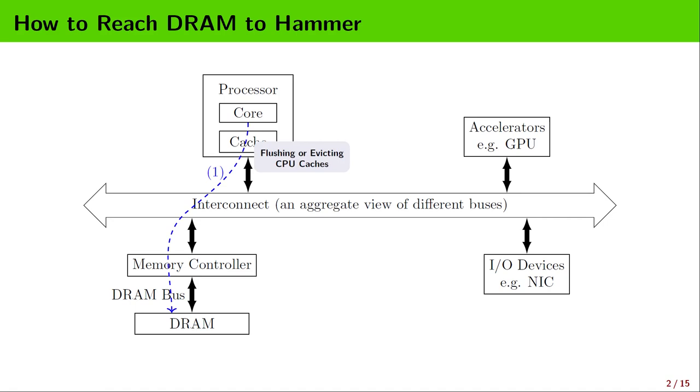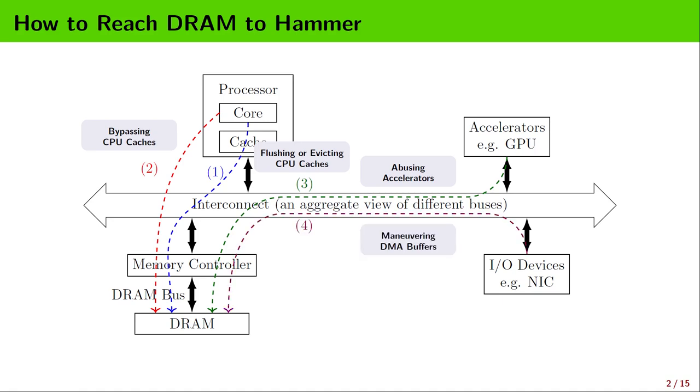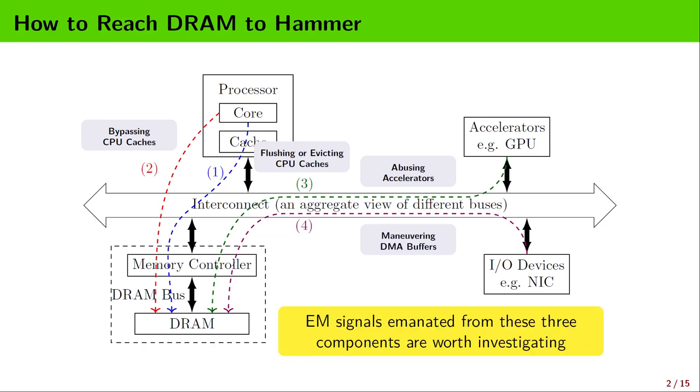There are several possible paths we can take to hammer the DRAM. We can flush or evict the CPU caches, or we can use some non-temporal instructions to bypass the CPU caches. Also, we may take advantage of some accelerators or I/O devices to repeatedly access the DRAM in a rapid manner. No matter which paths we take, three major hardware components must always be involved: the memory controller, memory bus, and memory modules. So we focus on the EM signals emanated from those components.